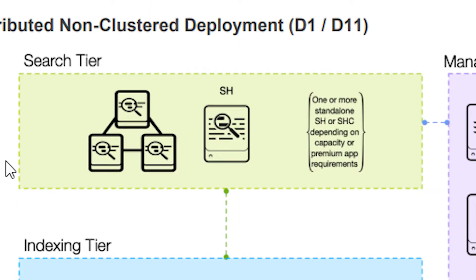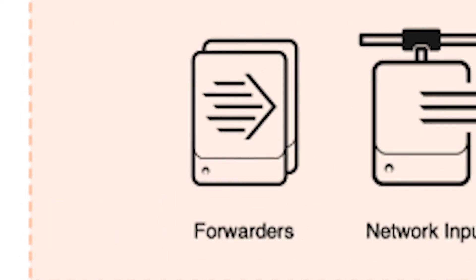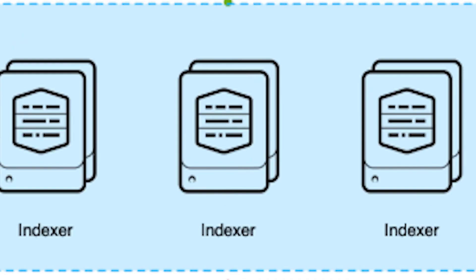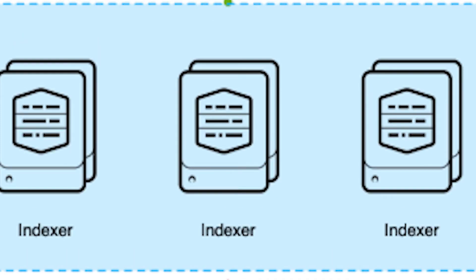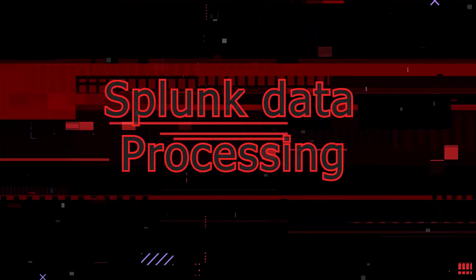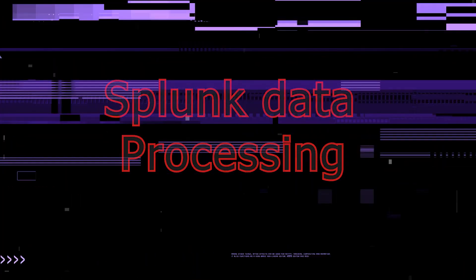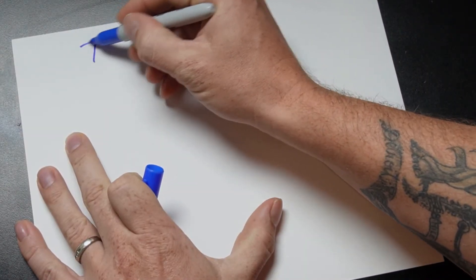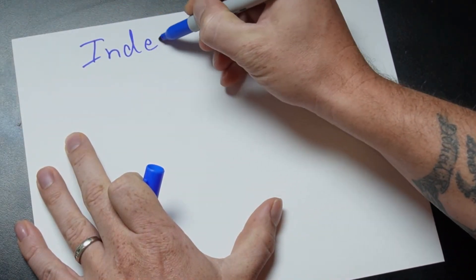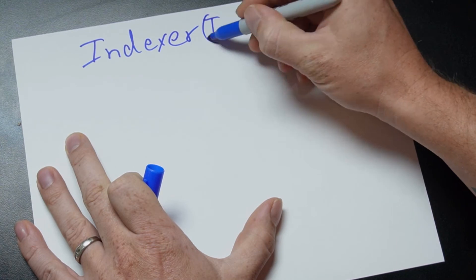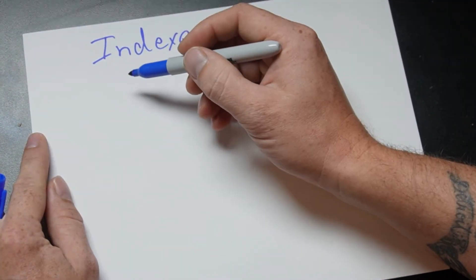The search head is where a user logs in to perform searches on stored data, and the forwarder is what sends the data into Splunk for processing. The indexer component is where a lot of the Splunk magic happens. It's here on the indexer that raw data is transformed into useful information. When raw data arrives at the indexer, it is sent through a series of steps called a data pipeline, which makes up the route that data takes through Splunk Enterprise.